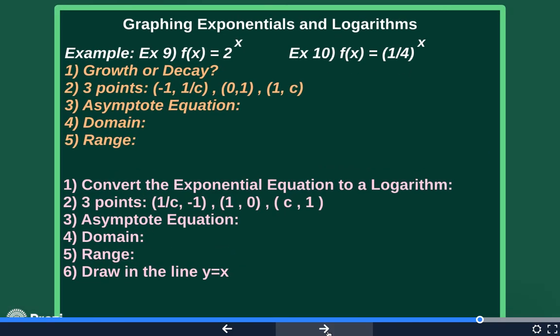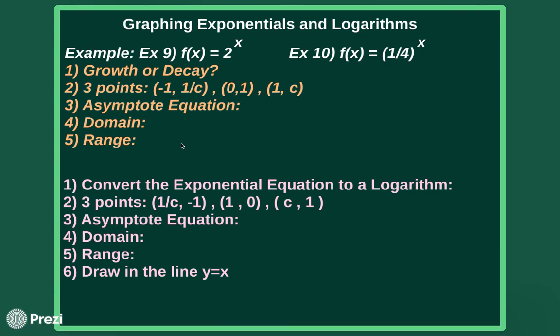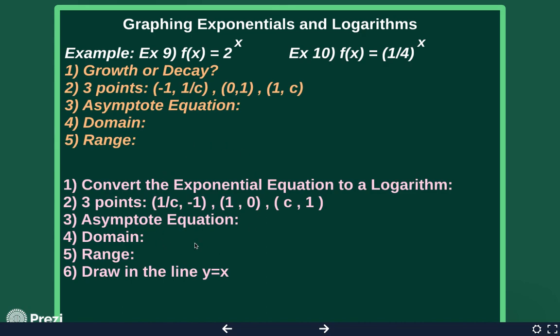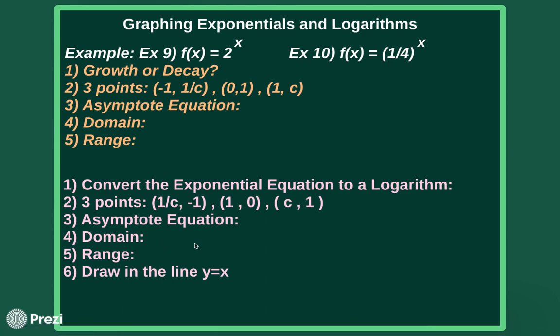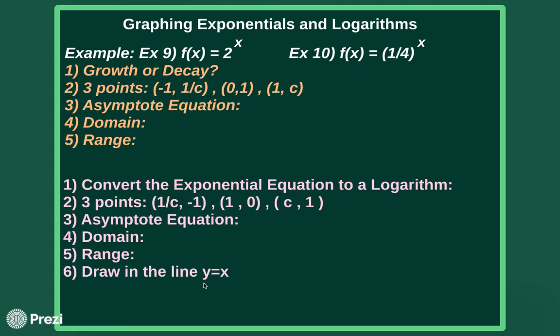So when we graph these, it's going to be very similar to when we graphed inverse equations, because exponentials and logarithms are inverses. We're going to start with exponential functions, graph them like we did in section one of the unit, and then using properties from section two, convert that into its inverse, which should be a logarithm, and then graph it. Since these are inverses, they should be symmetrical to the line y equals x when we're done. Go ahead and pause the video and work on examples nine and ten.